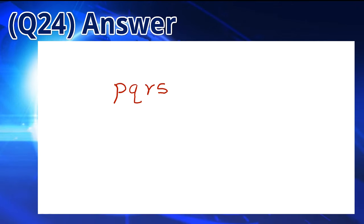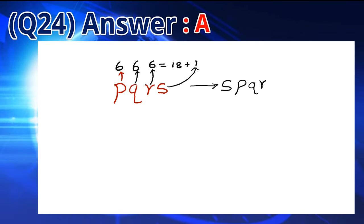There will be 6 starting with P, then 6 starting with Q, and 6 starting with R. So the 19th will be the first one starting with S. This is S, P, Q, R. So the answer is A.